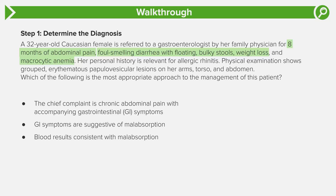The patient has a macrocytic anemia — low hemoglobin with very large red blood cells. The most common cause of macrocytic anemia is a deficiency or lack of absorption of vitamin B12, which can cause pernicious anemia. There's quite a wide differential: prolonged antibiotic use, celiac disease, Crohn's, chronic pancreatitis, cystic fibrosis, lactose intolerance — all of these could cause the clinical presentation described.